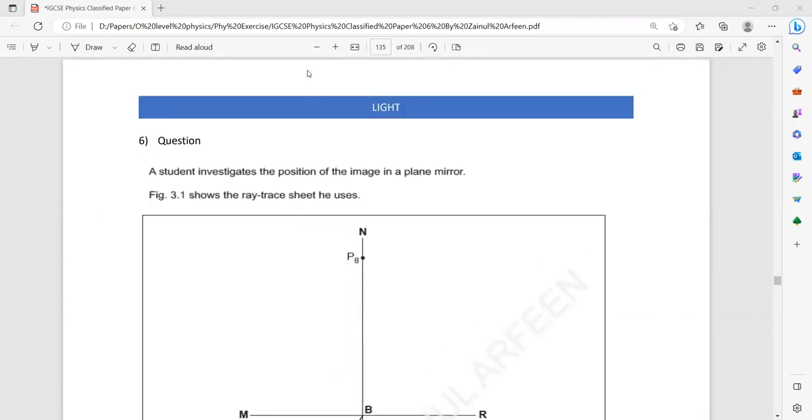One is the optical pin method. In optical pin method, we use a pin as an object and we locate its image by using other set of pins. And there's also another raybox method. Raybox method should be done in a dark room. There should be no light source. But if it's an optical pin method, then the room should be bright so that we can see the pins.